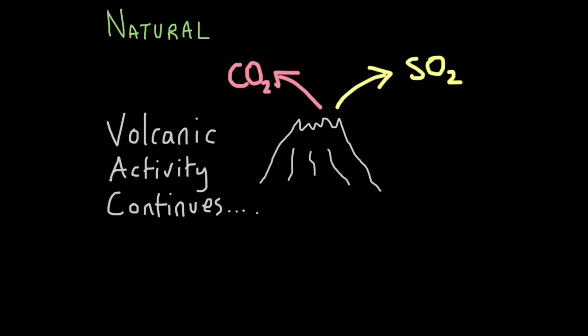But we're not completely to blame. Volcanic activity continues and continues to chuck out sulphur dioxide, which causes acid rain and volcanic smog, and also carbon dioxide, which again is linked to climate change.